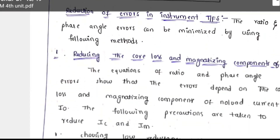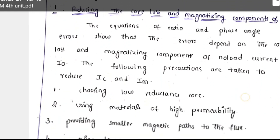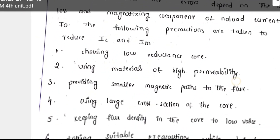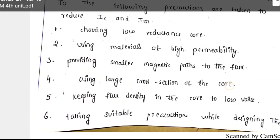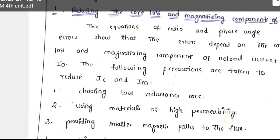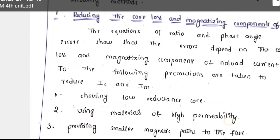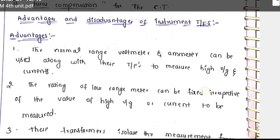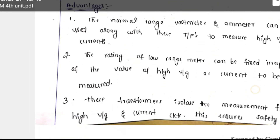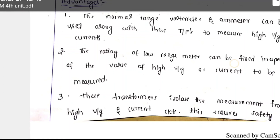How to construct PTs and CTs: a low-reluctance core is used. Some important measures are: using a large cross-section of the core and keeping the flux density in the core at a low value. These are some important construction considerations for CT and PT. The advantages of instrument transformers include: a normal-range voltmeter or ammeter can be used. Instrument transformers are also used in power system protection and in relays.